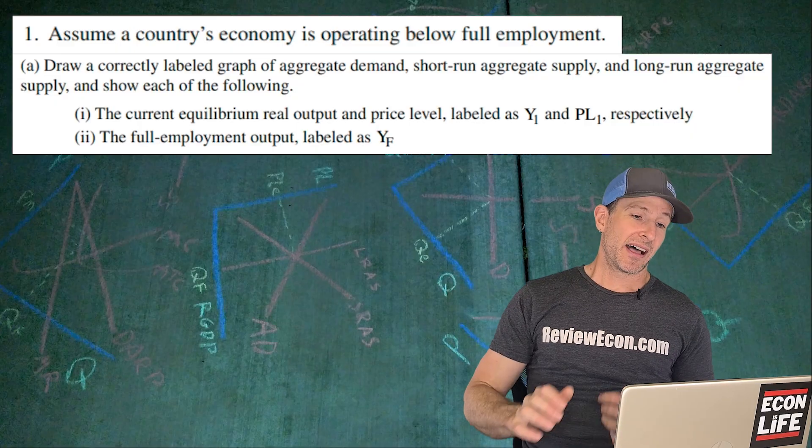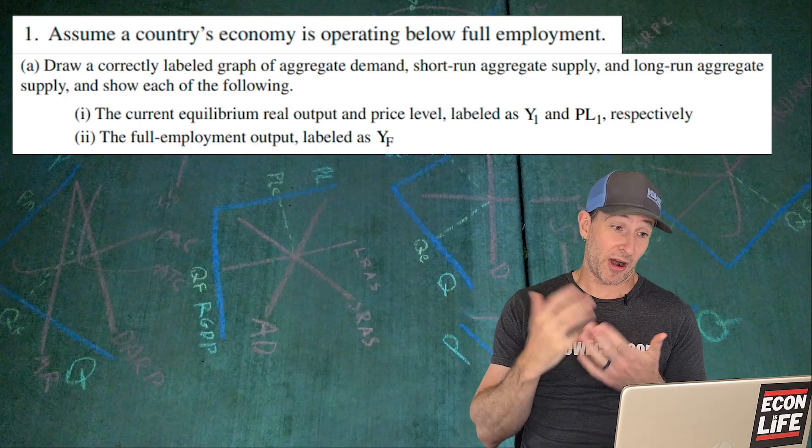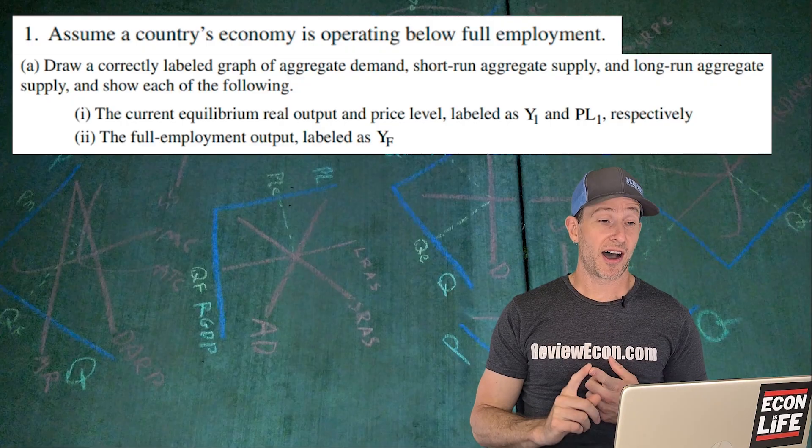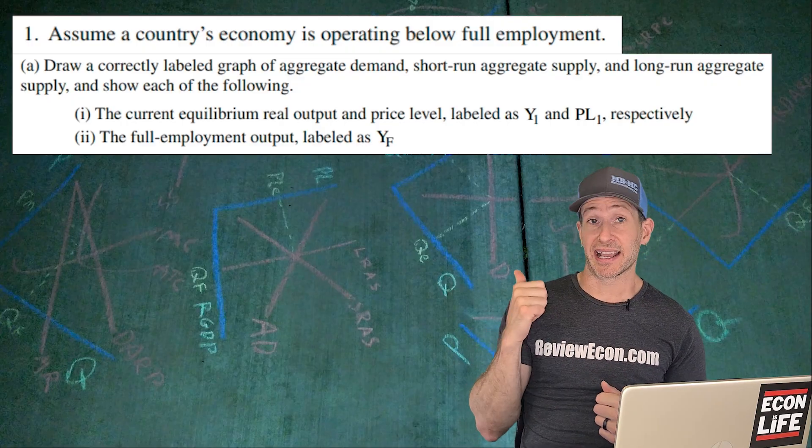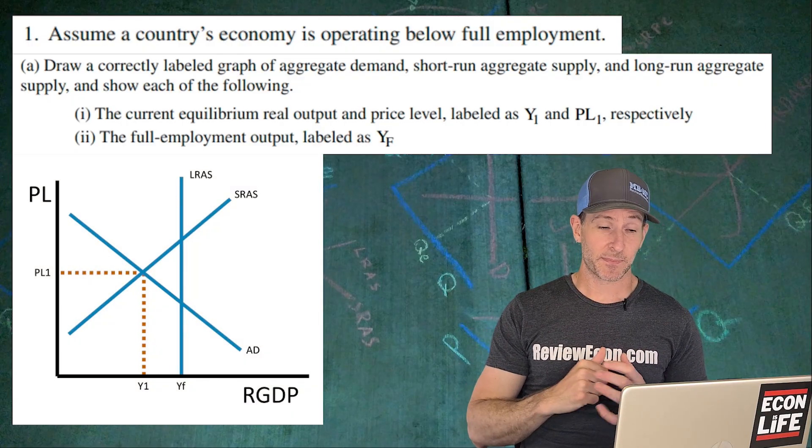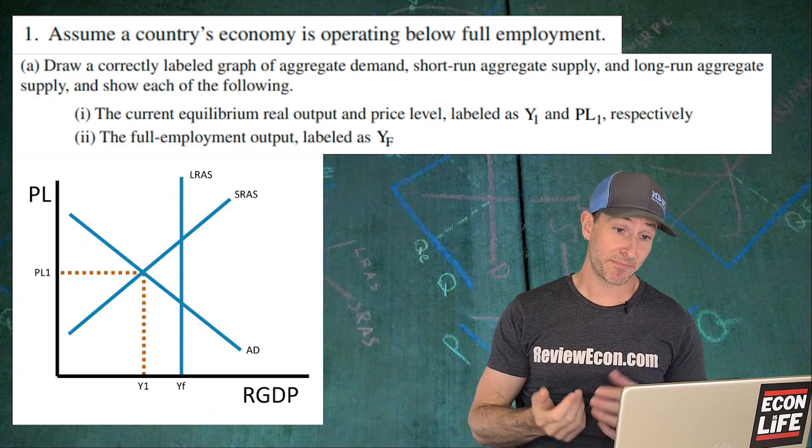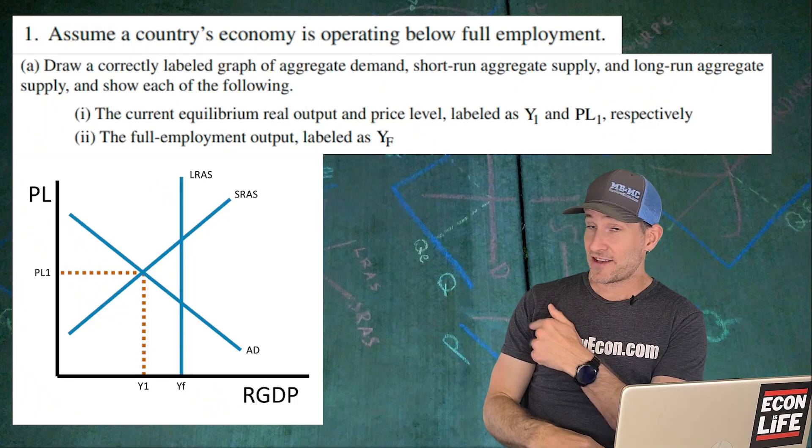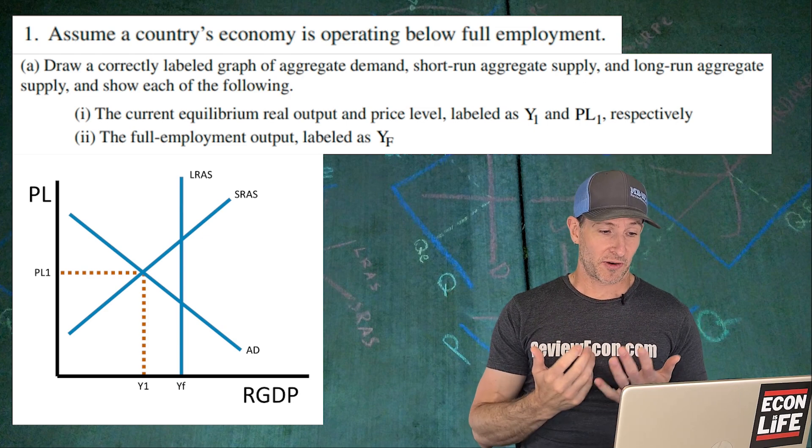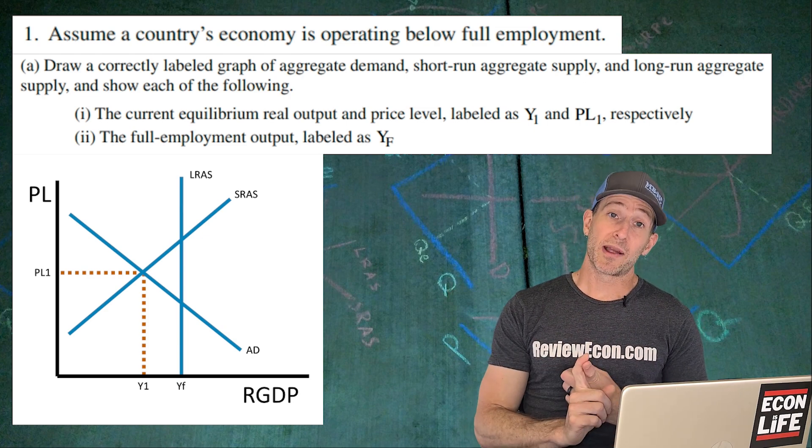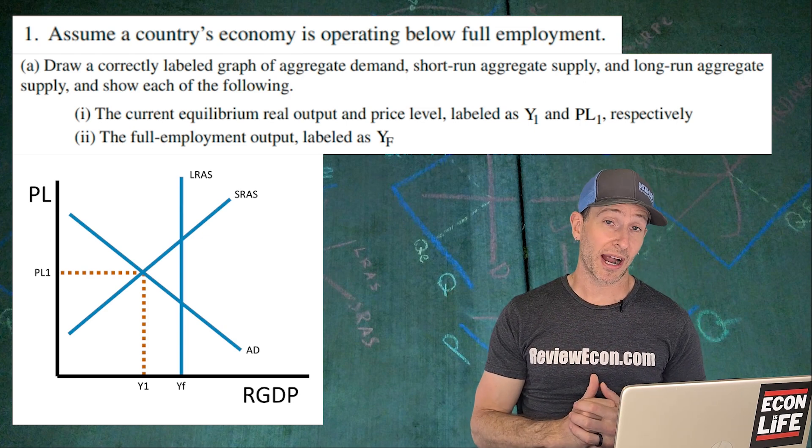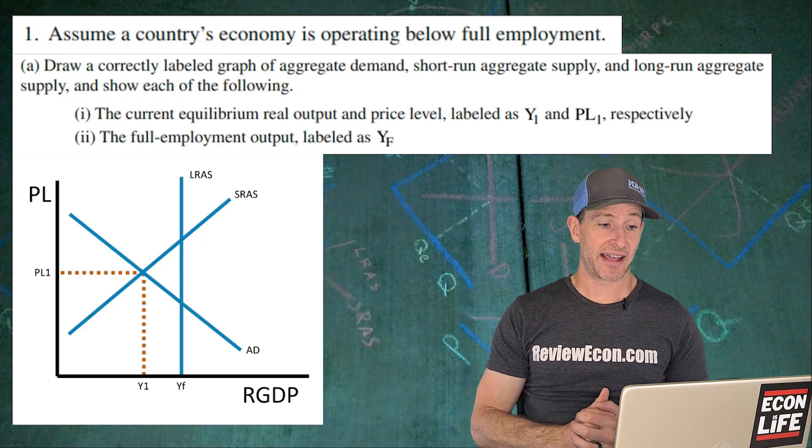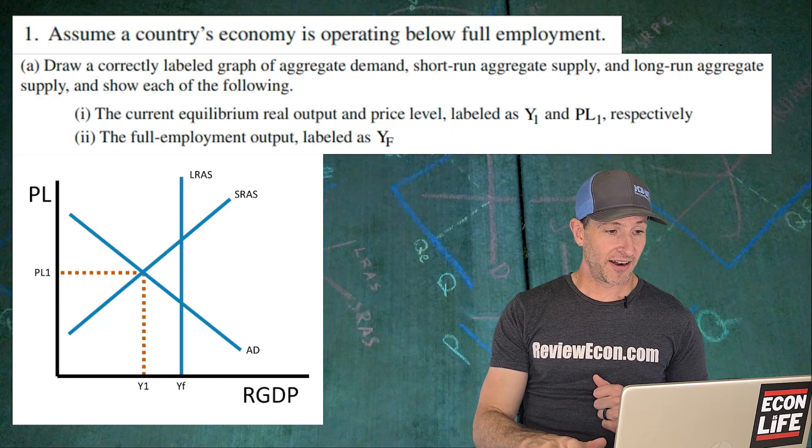First, we have a country's economy operating below full employment and we're going to draw an ASAD model using the labels they've told us to label. It is a recessionary gap because we're operating below full employment. YF is marked below the long-run aggregate supply curve. Y1 is there at a lower output than the full employment output and PL1 is marked at the intersection of the SRAS and the AD curve.